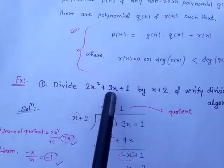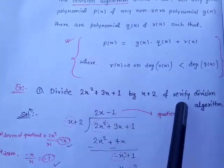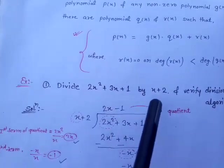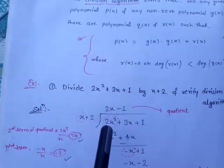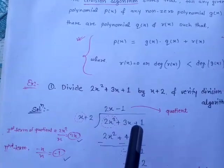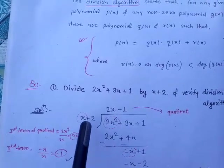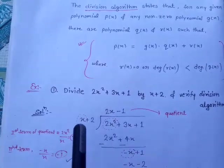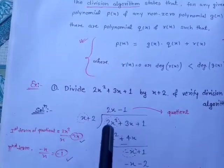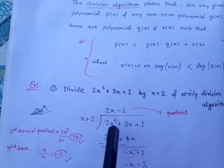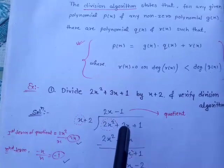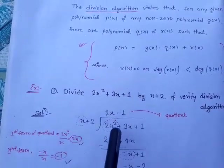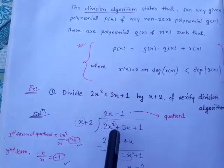Divide 2x² + 3x + 1 by x + 2 and verify the division algorithm. So we divide 2x² + 3x + 1 by x + 2. First, write in standard form in decreasing order of variables: 2x² + 3x + 1, where the highest degree is 2, and the divisor is x + 2.